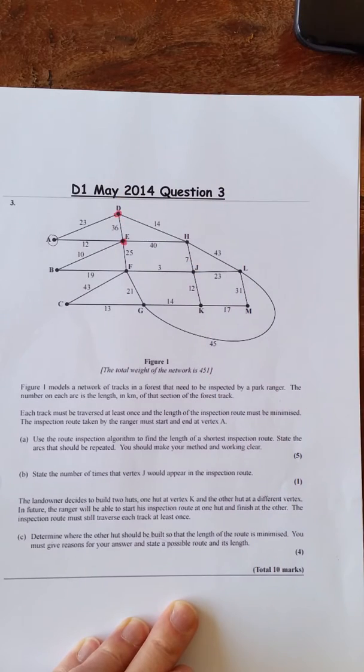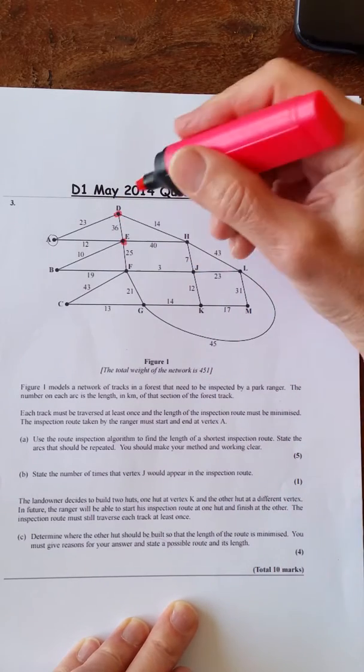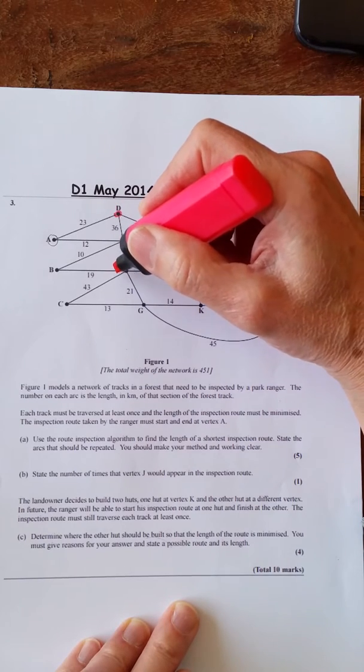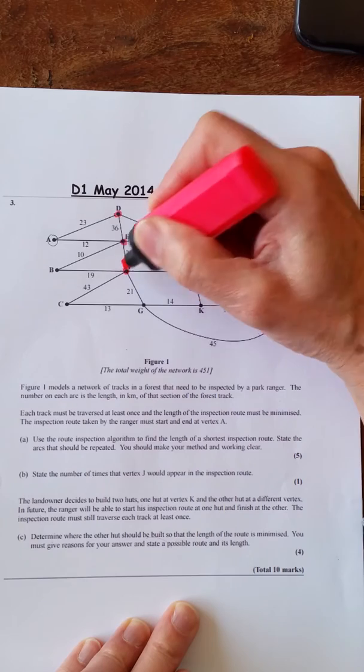Odd nodes means that the valency or the order of the nodes is odd. So there's three arcs coming from this one. We've got this one here. One, two, three, four, five.